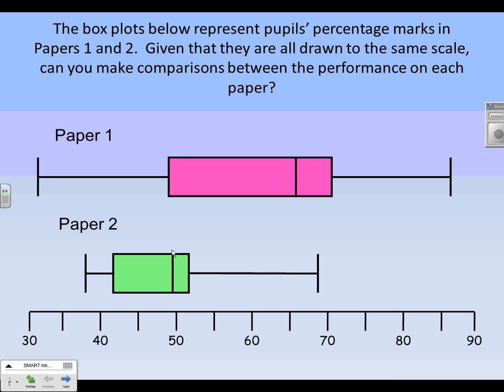So there's your median for paper one, there's your median for paper two. Median for paper one about 66, median for paper two about 49. So what you can see there is the median for paper one is higher. Therefore, on average, the marks are higher in paper one. Pupils achieved more marks in paper one. So there's your average comment.